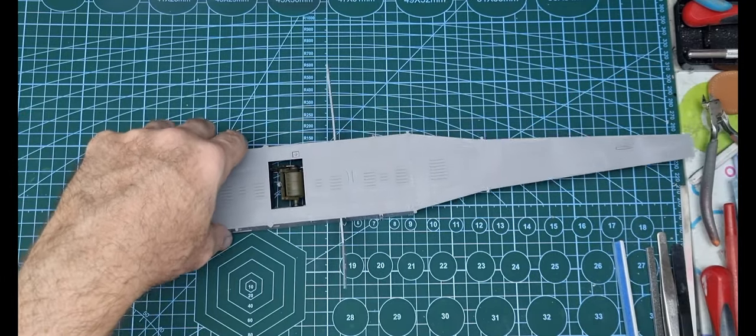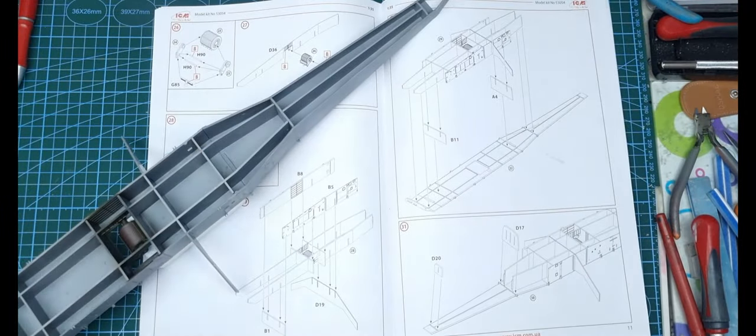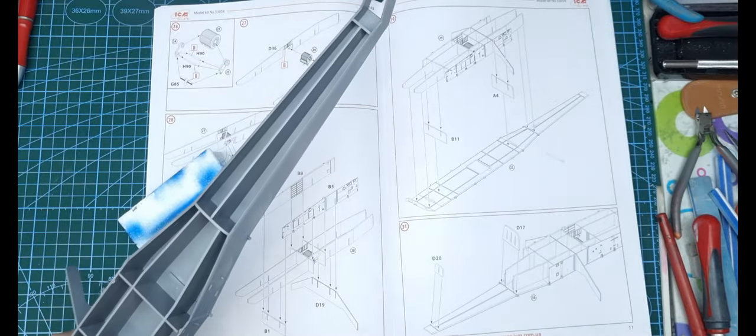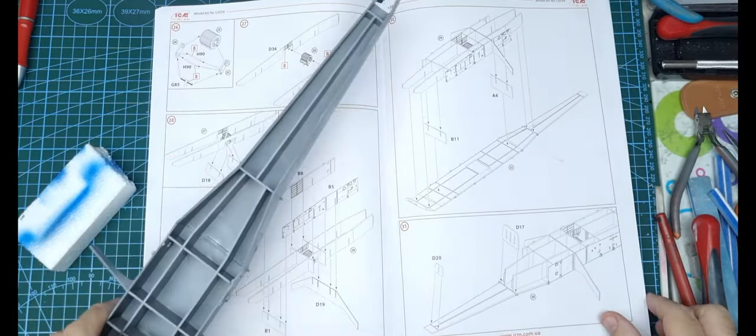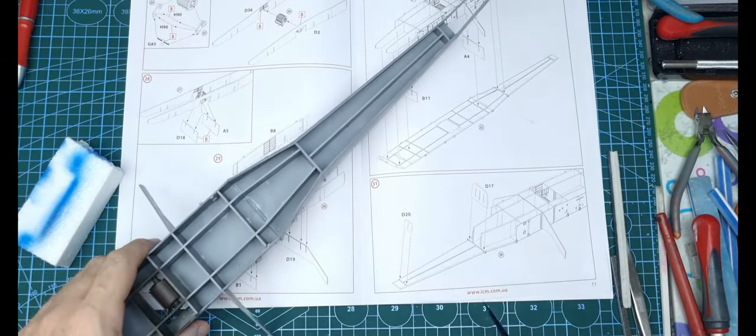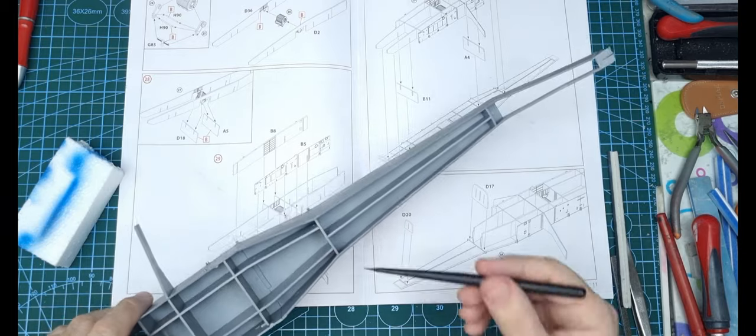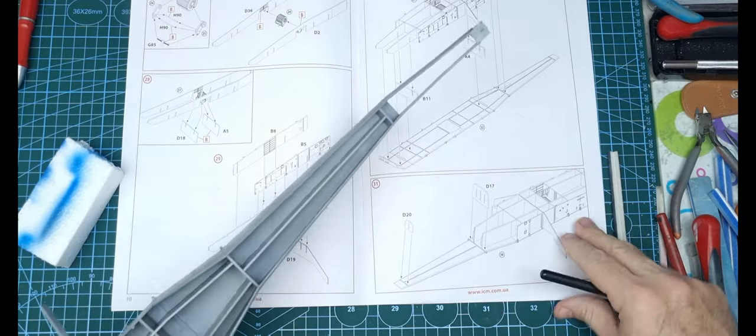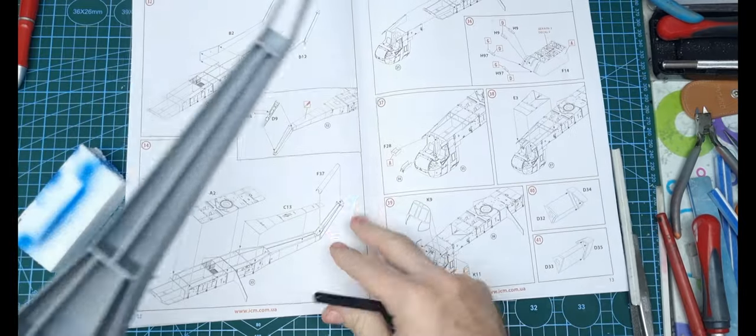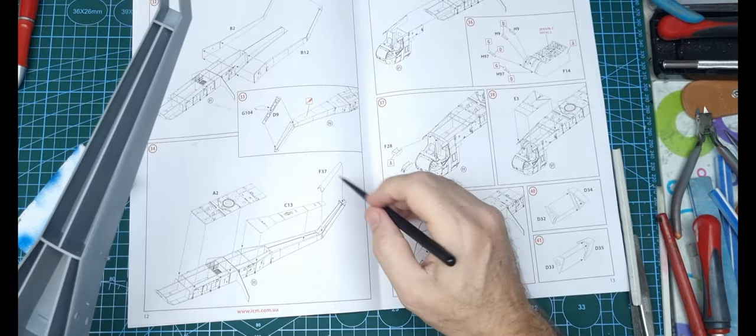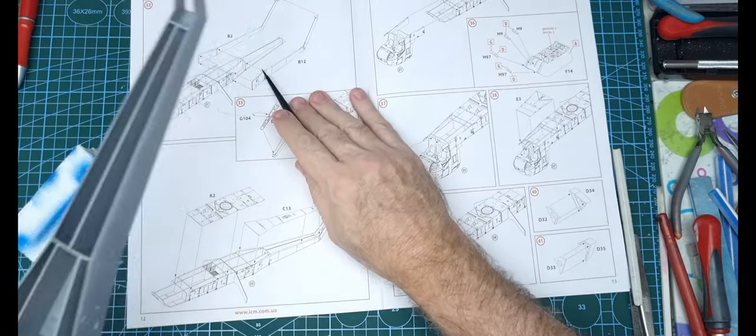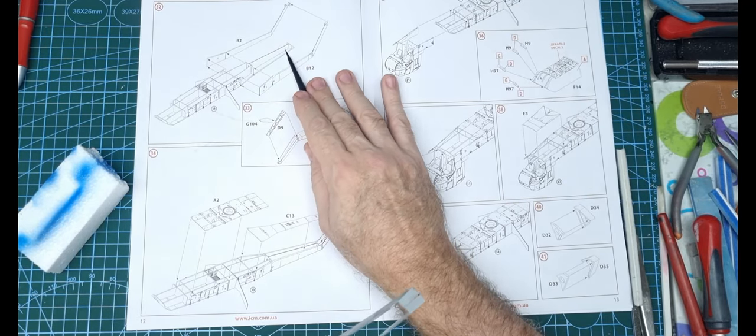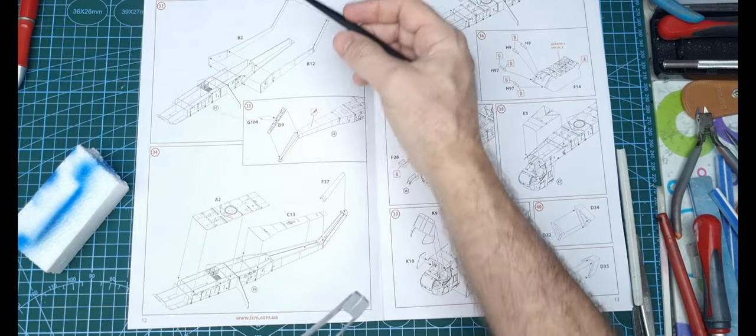Yeah, so no problems there. I was just putting the tail section on and I noticed in the instructions ICM have omitted a part. So we see here we got these bulkheads, that's D17, D20, and there's a groove there. I didn't take much notice to it. So I got over here, I was putting the glue on the tail exterior skin on, and I noticed in the image there's a part in there which they haven't put the number in for.